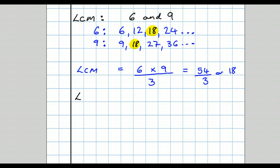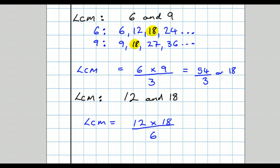Let's find the lowest common multiple of 12 and 18 — we saw these two numbers earlier as well. We're not going to write out all the multiples; we're going to use the method I just showed you. So the lowest common multiple equals 12 times 18 divided by the highest common factor, which we saw was 6. I can cancel before doing any multiplication: 6 will go into 12 twice, and into itself once. Now I multiply all the numbers that are not crossed out: 2 times 18 is 36. The lowest common multiple of 12 and 18 is 36.